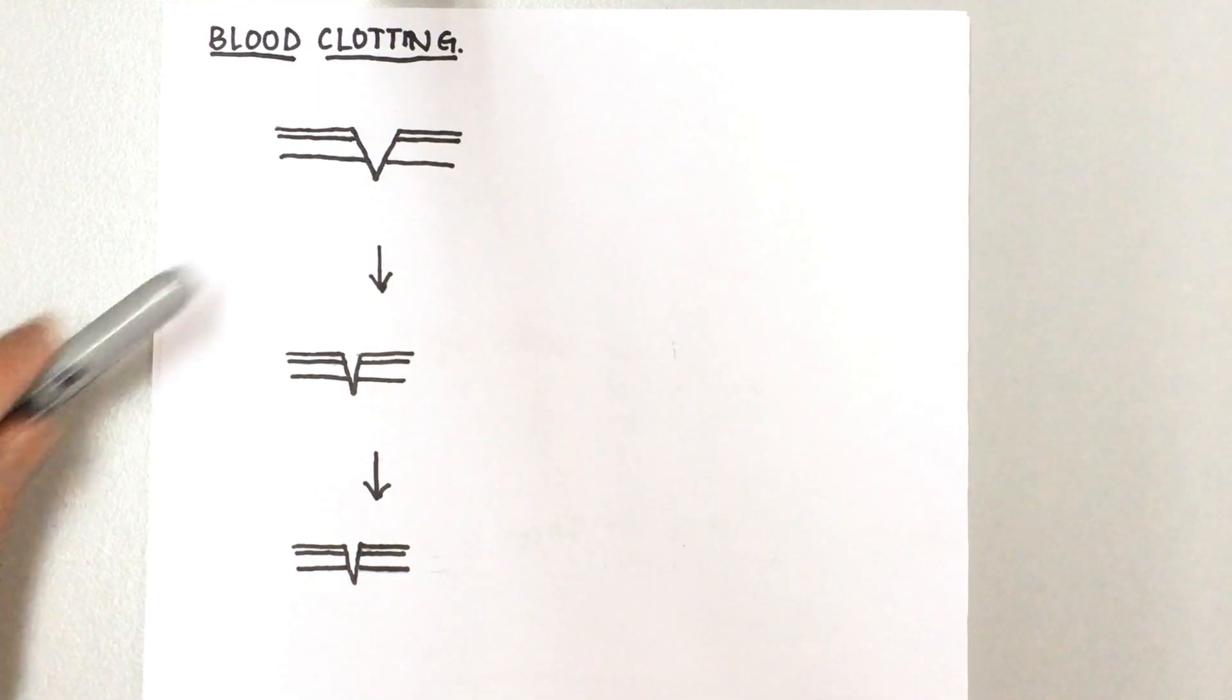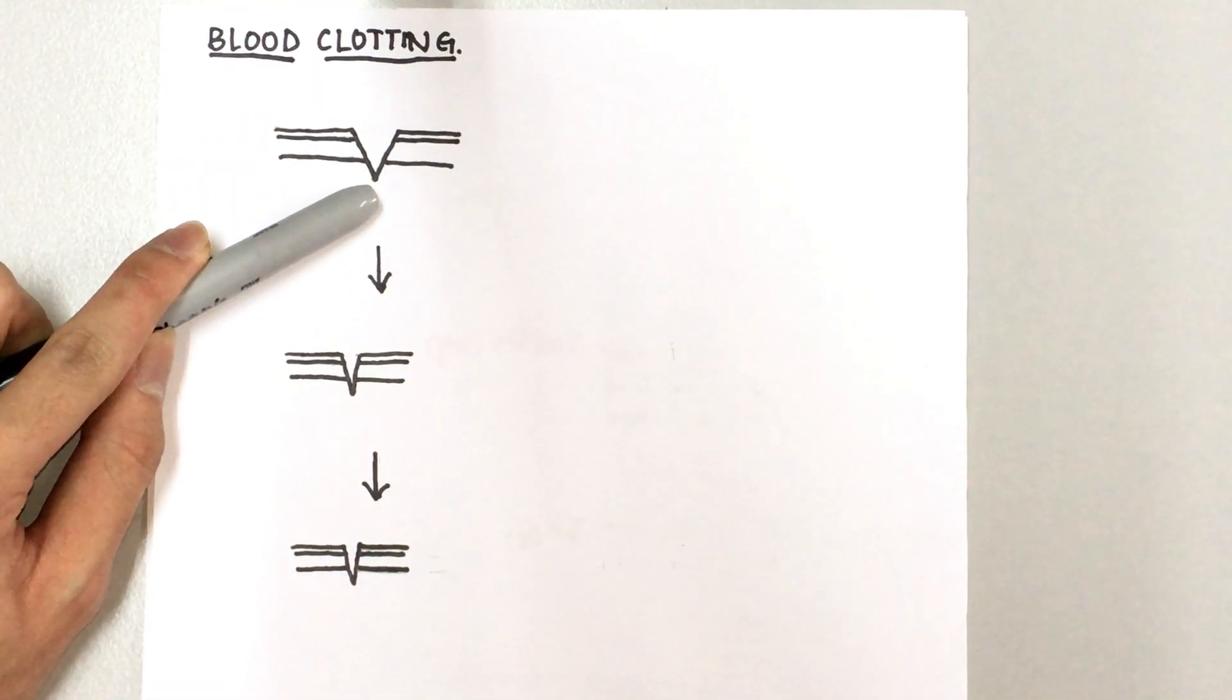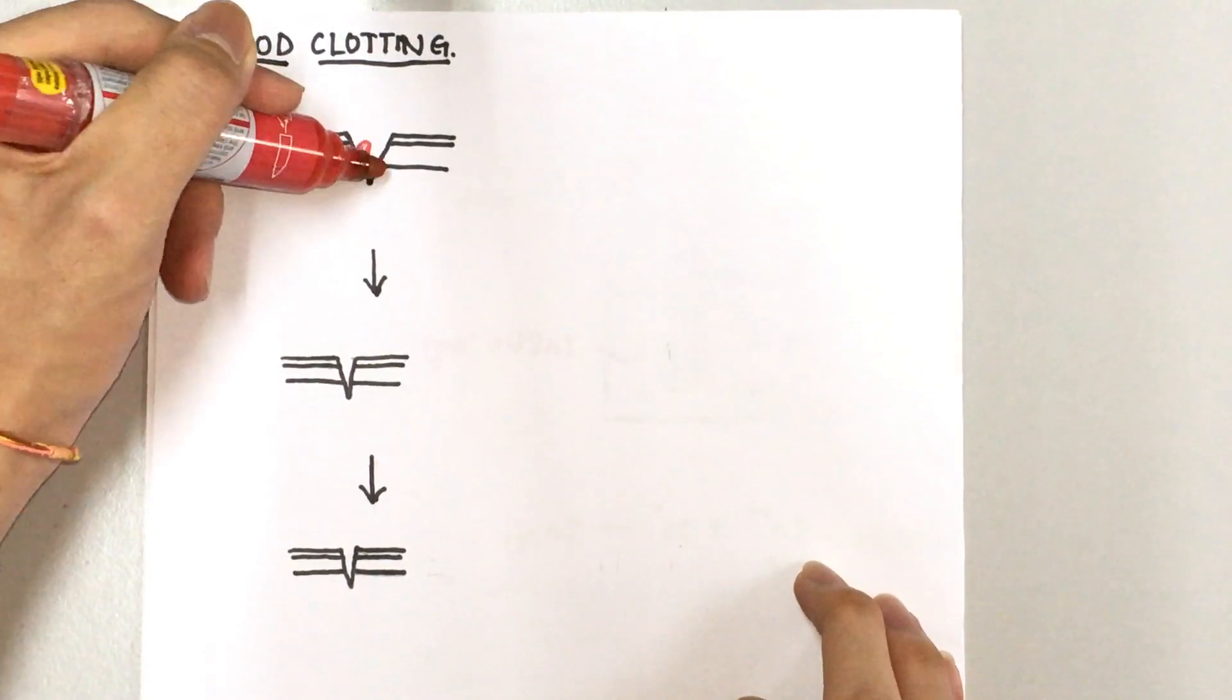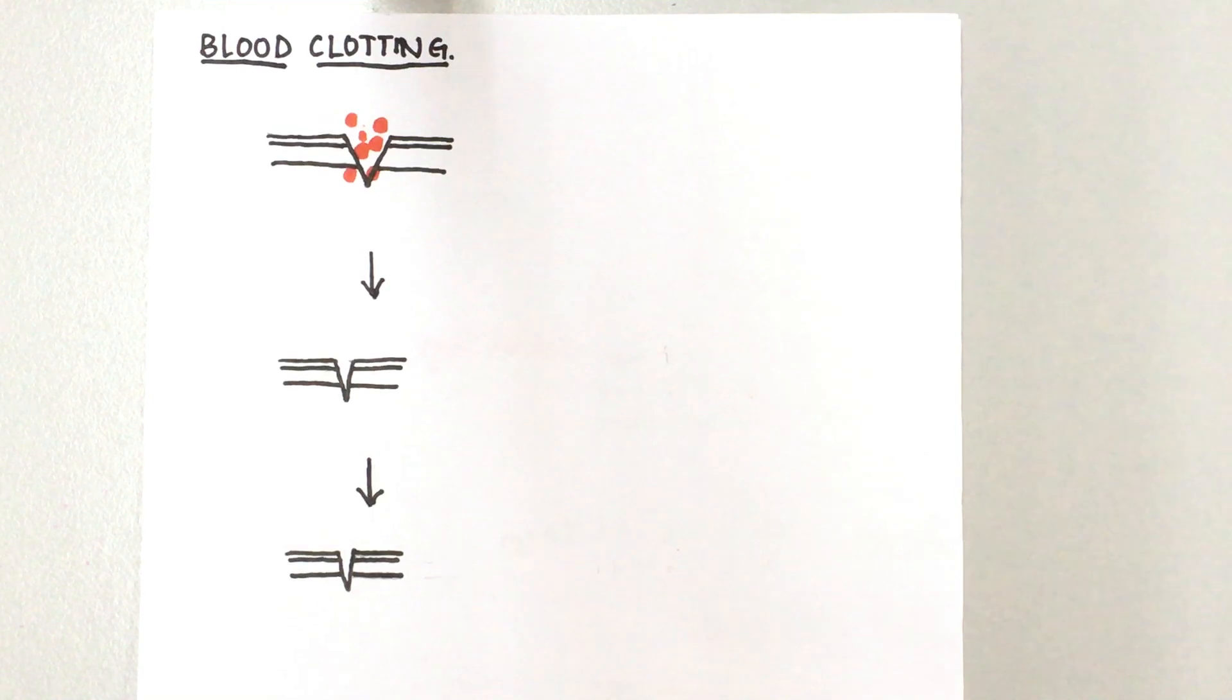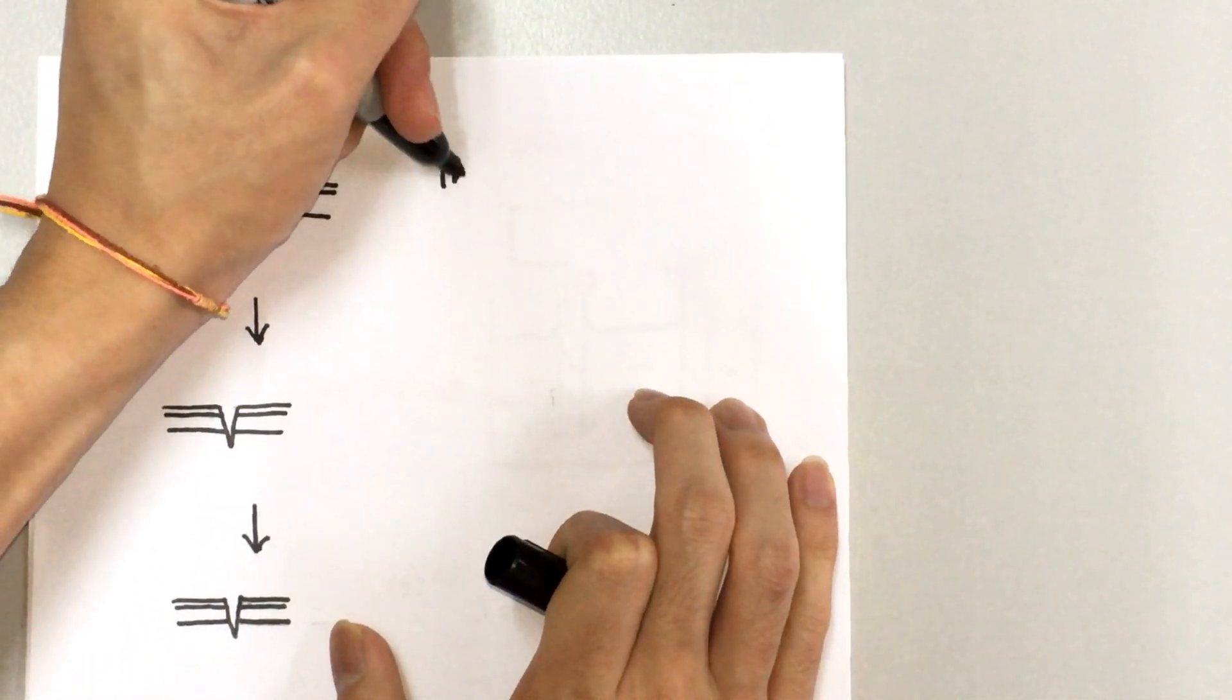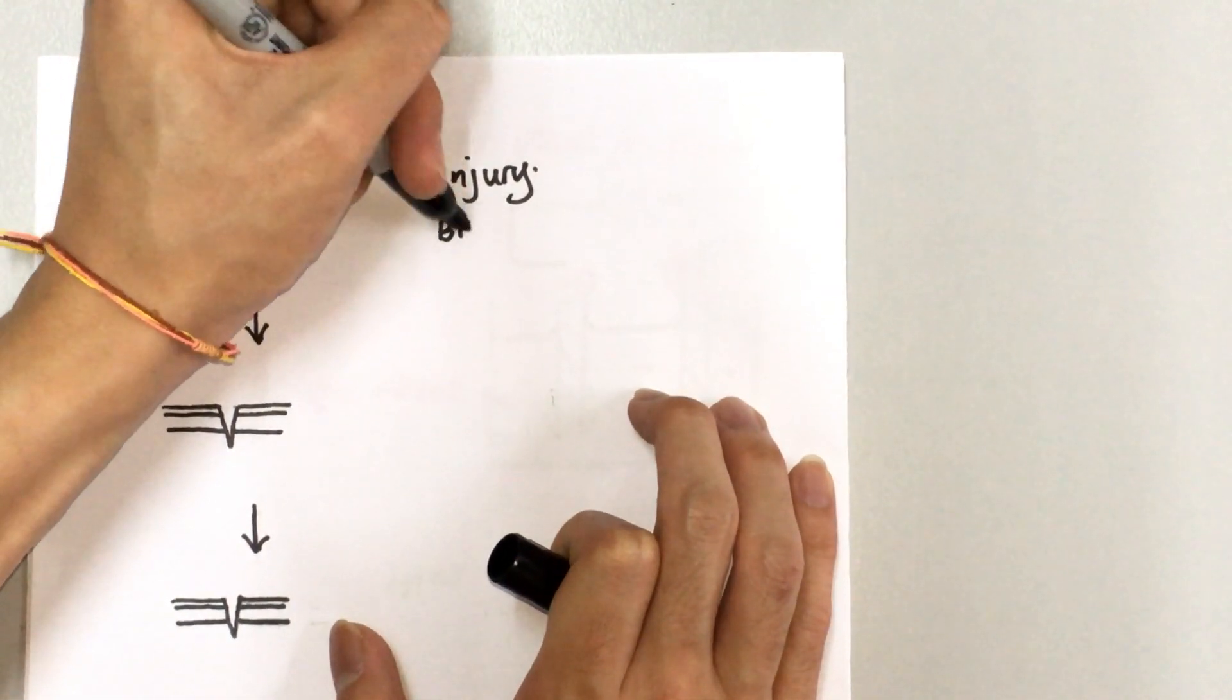start with what happens first. So here we have an injury to a blood vessel, okay, which will lead to the loss of your blood like that. So we first start off with injury and then we have blood loss.